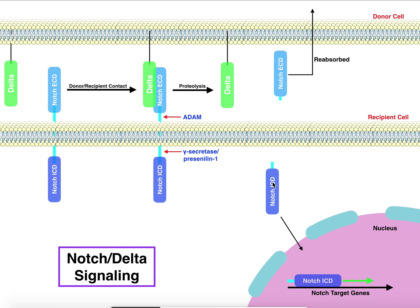That's the basics of Notch-Delta signaling. Delta and the Notch extracellular domain come into physical contact, triggering conformational changes that activate extracellular proteases such as ADAM and intracellular proteases such as gamma-secretase and presenilin-1. This triggers clipping of the Notch extracellular domain — which is endocytosed into the donor cell and has effects there — and importantly, the Notch intracellular domain moves into the nucleus of the recipient cell to turn on Notch target genes, producing a biological effect.